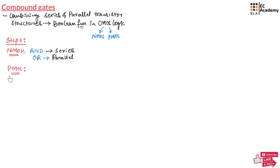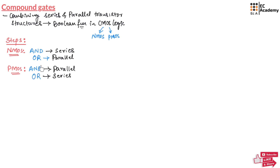When implementing the Boolean function using PMOS, PMOS will perform NOT operation. Since PMOS is performing NOT operation, it has to perform the opposite function of NMOS. That is why when there is an AND operation we need to connect PMOS in parallel, and for OR operation in the Boolean function we need to connect PMOS in series.